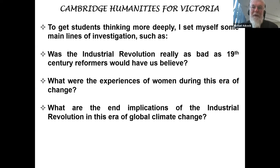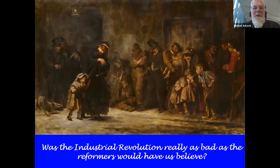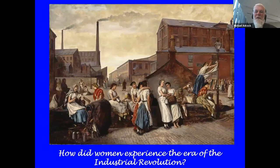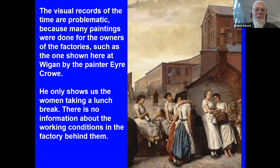It's so easy to give technical information about inventions, but so much more difficult to cultivate empathy about their effects on human life and experience. I make intensive use of images in the chapters. This painting by John Lucas is much more than a group portrait — it's a portrait of a remarkable generation of inventors who made breathtaking leaps in technology, such as the Great Britannia Bridge behind them. To get students thinking more deeply, I set a few themes: Was the Industrial Revolution really as bad as 19th century reformers would have us believe? What were the experiences of women during this era of change? And what are the implications of the Industrial Revolution in our own era of global climate change?